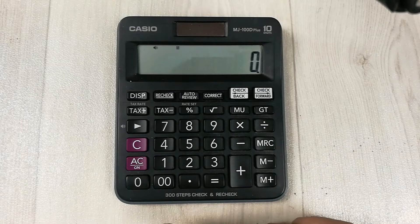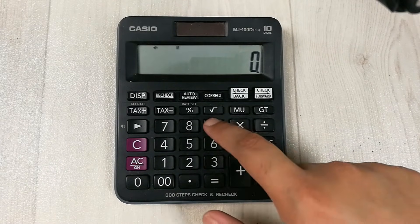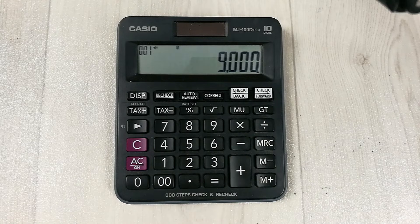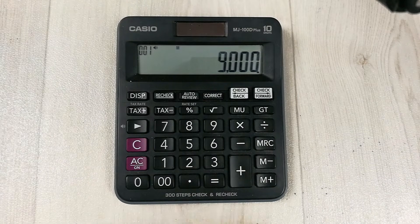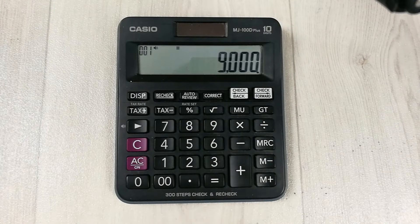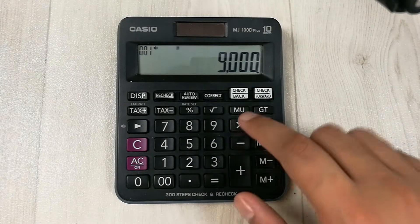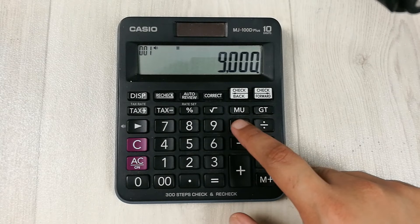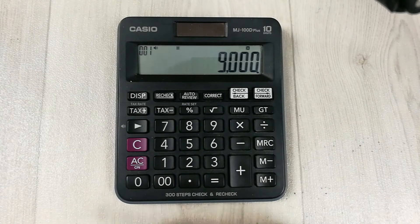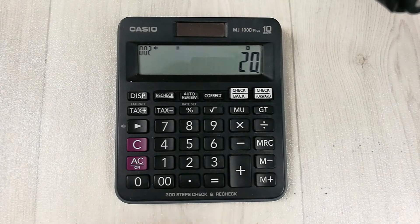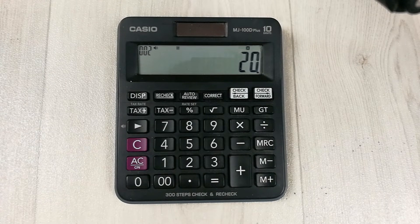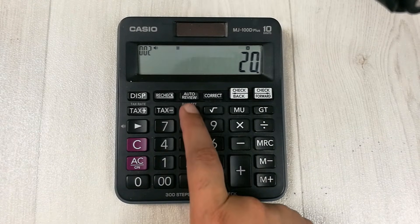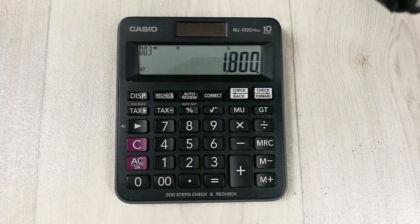Let's say I have an item and the price of that item is 9000. Now I want to calculate 20% of this price. So we multiply this 9000, we press the multiply button, then we press 20 because we want to calculate 20%, then we press this percentage button.